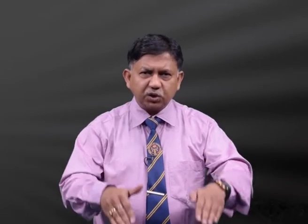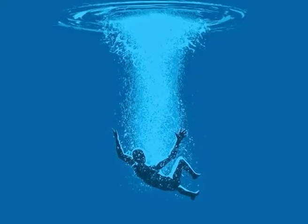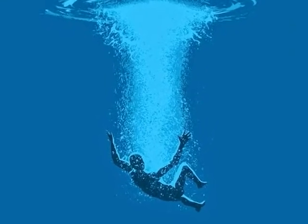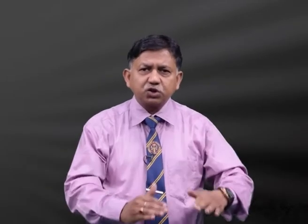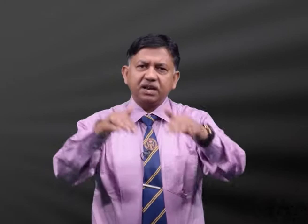Let us see the mechanism of drowning — how it happens. When a person falls into the water, initially he sinks to a depth corresponding to the momentum of his fall. However, the inherent buoyancy along with struggling movements and the air trapped in his clothes tends to make the person float rather than sink, and then the person rises towards the surface.